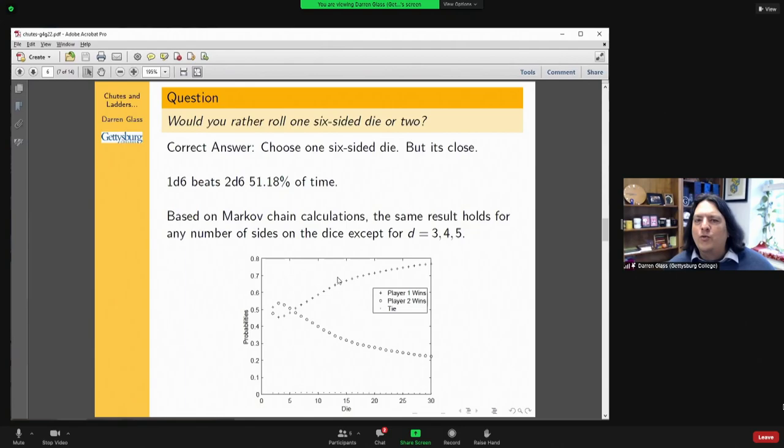The correct answer actually is that you should choose one six-sided die, but it's really close. One die beats two dice 51% of the time. So you shouldn't feel bad if you chose two dice and got the wrong answer, because it is really close. We computed this using various Markov chain calculations. If anyone's actually interested, feel free to email me and I'll give you the calculations.